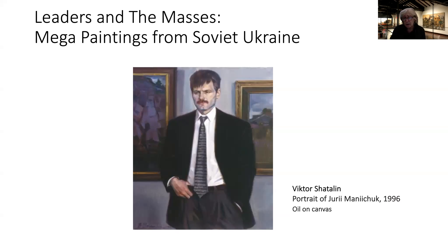These Soviet exhibitions were usually structured in a certain way. They were supposed to represent all the major Soviet genres of painting. The top genre in the Soviet hierarchy was the large thematic painting on historical and revolutionary themes — representing the revolution, civil war, World War II, Soviet leaders, with multi-figure compositions. There would also be individual portraits, still lifes, and landscapes, considered minor genres but not excluded from large official exhibitions.